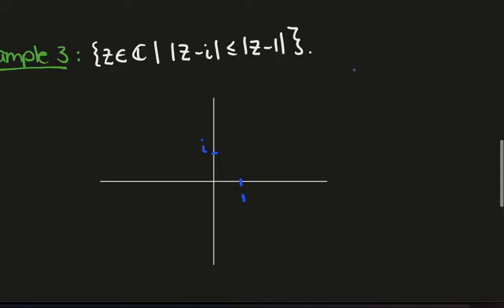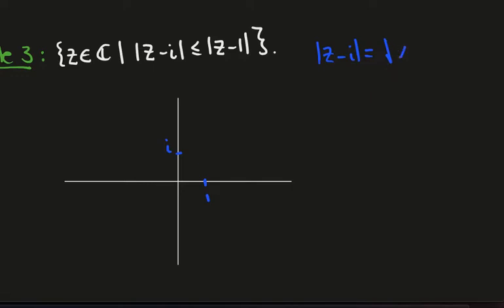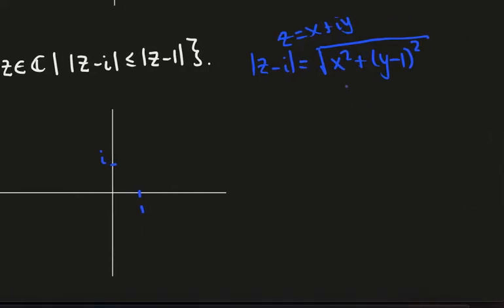The way I'm going to do that is I'm going to write mod z minus i as the square root of x squared plus (y minus 1) squared. So I'm going to write z as x plus iy. And so that's what that is.